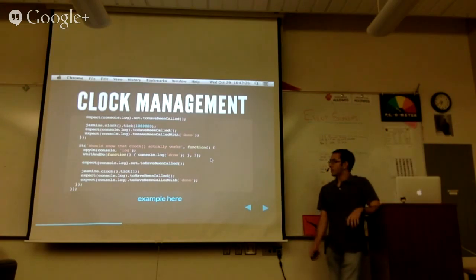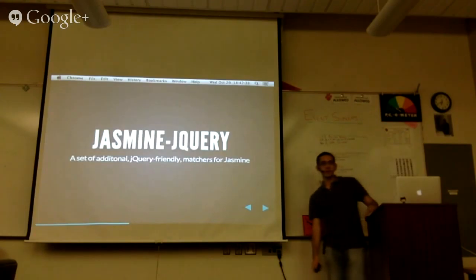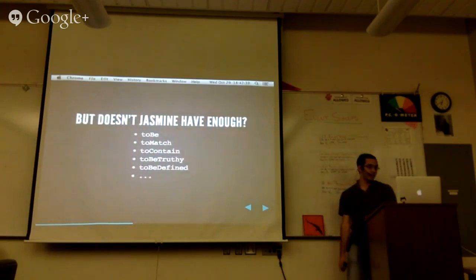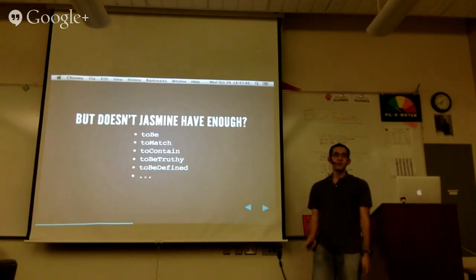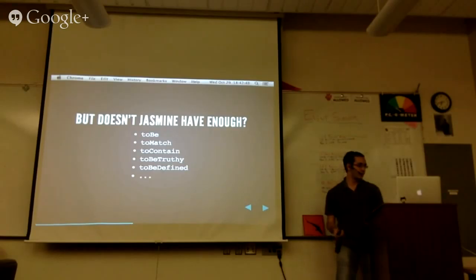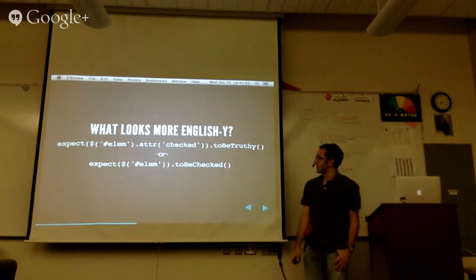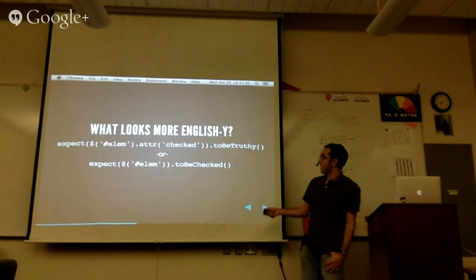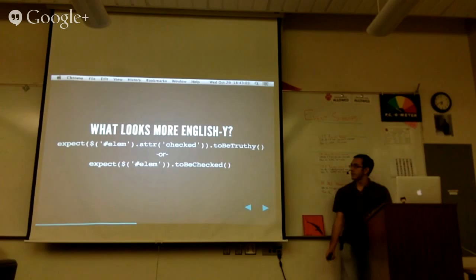On top of Jasmine there are a couple of other frameworks — one of them being Jasmine-jQuery. It's an additional set of jQuery-friendly matchers. Jasmine already has a lot built in — to be, to be truthy — so you have a large suite to begin with. But then there are things that look ugly with just those. What looks more like English: expect element dot attr checked to be truthy, or expect it to be checked?